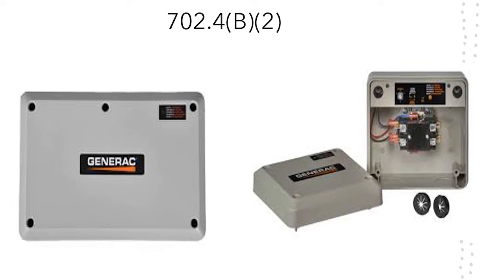This morning we're in NEC 702.4 B2. The major question is: what size generator do I use? In 702.4 B1, it allows you with manual transfer switch equipment to manually select the loads that satisfy code, meaning you could technically put a manual transfer switch for your entire home on a tiny generator and legally be allowed to manually switch them, and it still satisfies code.